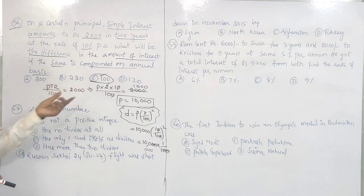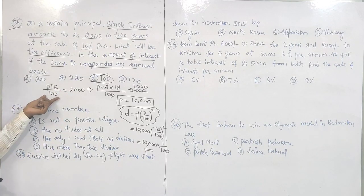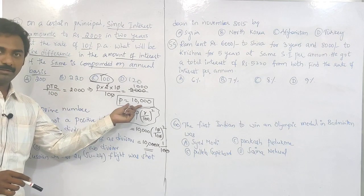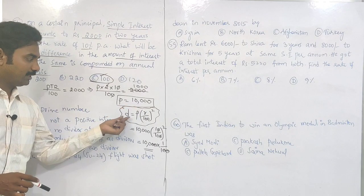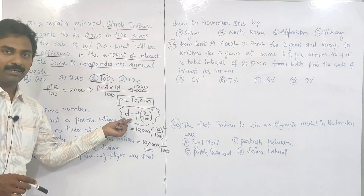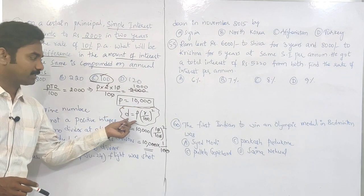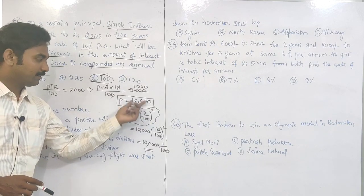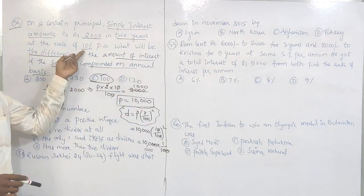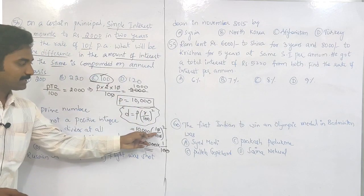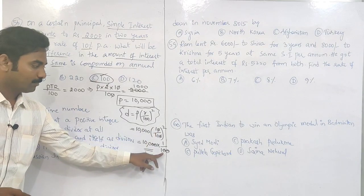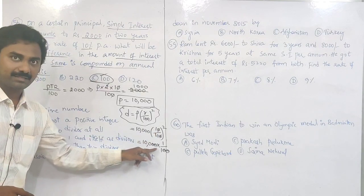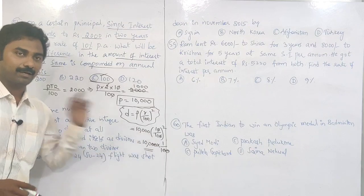You have to remember two formulas: simple interest formula is PTR/100 — from that we find the principal P. The difference between simple interest and compound interest is P × (R/100)². Principal is 10,000, rate of interest is 10%, so 10/100 whole square is 1/100. Two zeros cancel and the answer is 100.